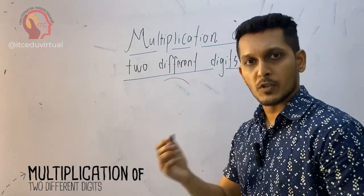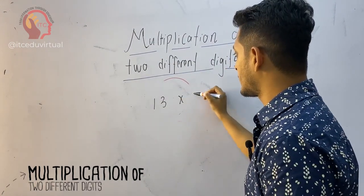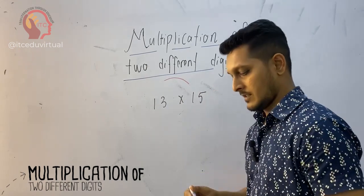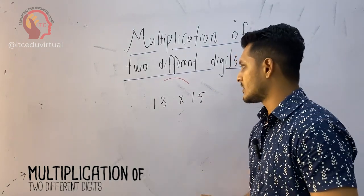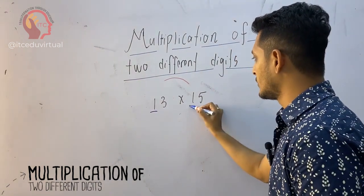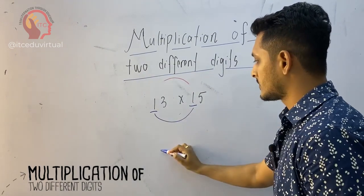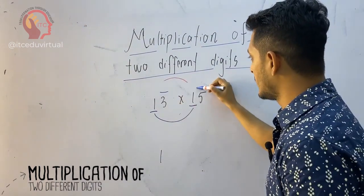For example, go for a smaller number: 13 times 15. Using mental maths, use the pattern 1, 1, 1, 3, 5.